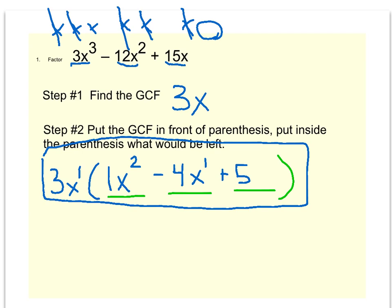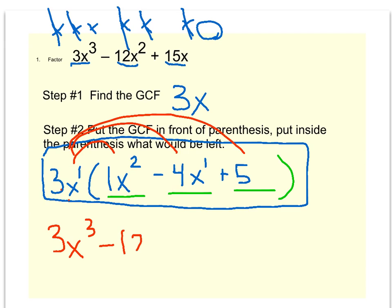Now you can check your work by applying the distributive property to see if you get back to the beginning. Three x times one x squared is three x cubed. Three x times negative four x is negative twelve x squared. And three x times five is positive fifteen x. Since this matches where we started, we know we've done it right.